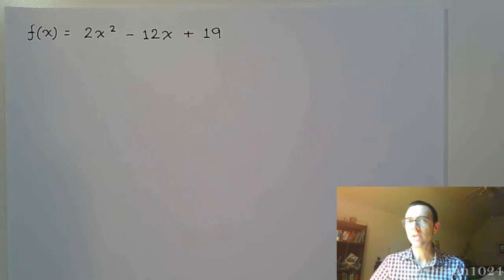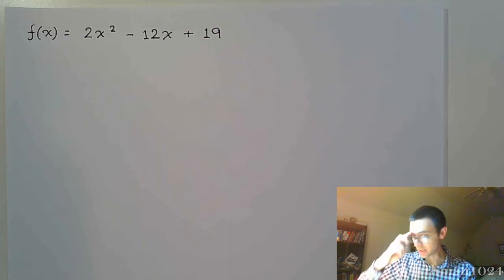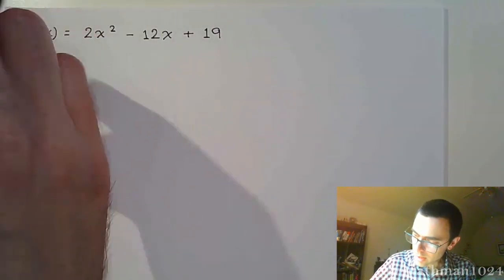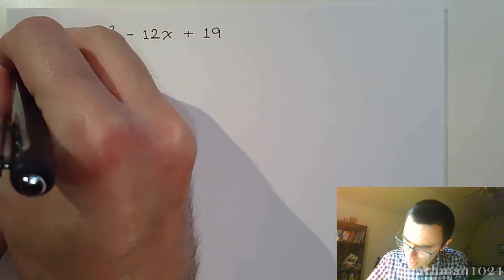All right, here is our next example for graphing quadratic functions. We have f(x) is equal to 2x squared minus 12x plus 19. As we did in the other example, here's what I want us to find.